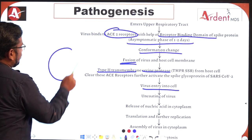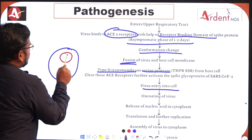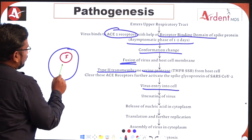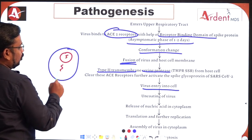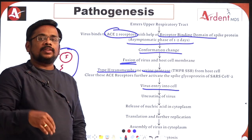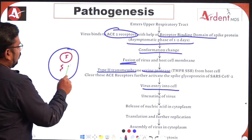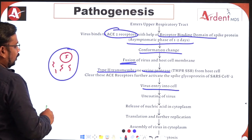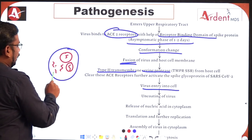Once the virus enters inside the cell — being a single-stranded RNA virus — a process called uncoating occurs, meaning the nucleic acids come out in the cytoplasm. These nucleic acids are then replicated by a process called translation — which is protein synthesis — and finally assembly of the virus occurs again.